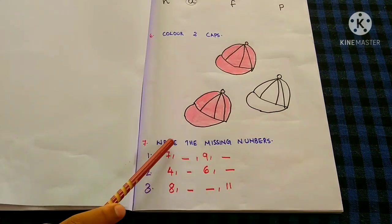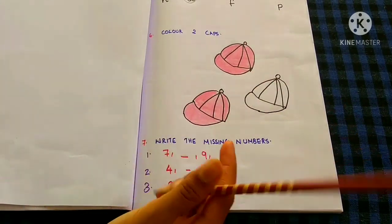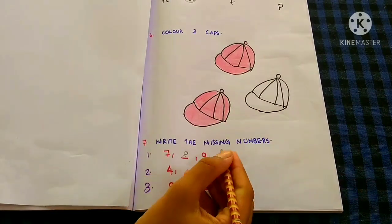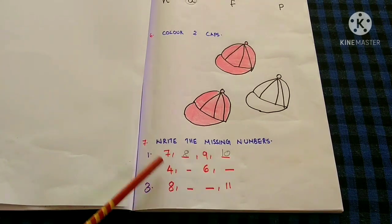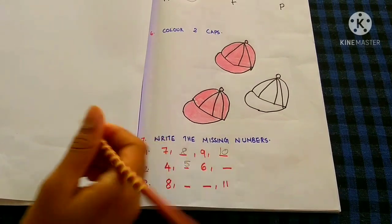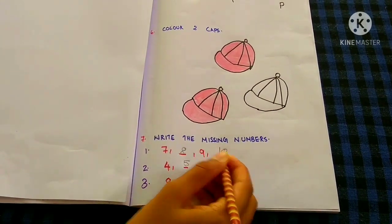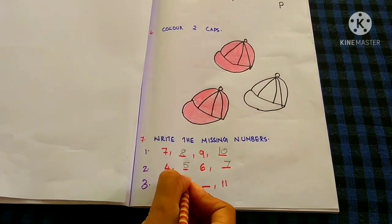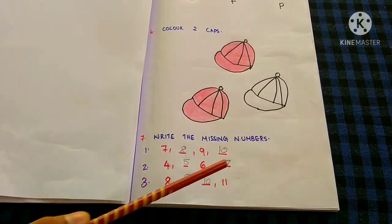Write the missing numbers. 7, 8, 9, 10. 5, 6, 7, 8, 9, 10.